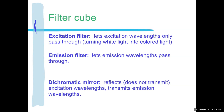In the filter cube there is an excitation filter — it lets only the excitation wavelength pass through, so white light becomes colored light. The emission filter only lets the emission wavelengths pass through — this is also known as a barrier filter, just as an extra backup so we know what we're seeing. There's also the dichromatic mirror, also known as the beam splitter — one of the best names in science. It reflects but does not transmit the excitation wavelengths, and it transmits the emission wavelengths.